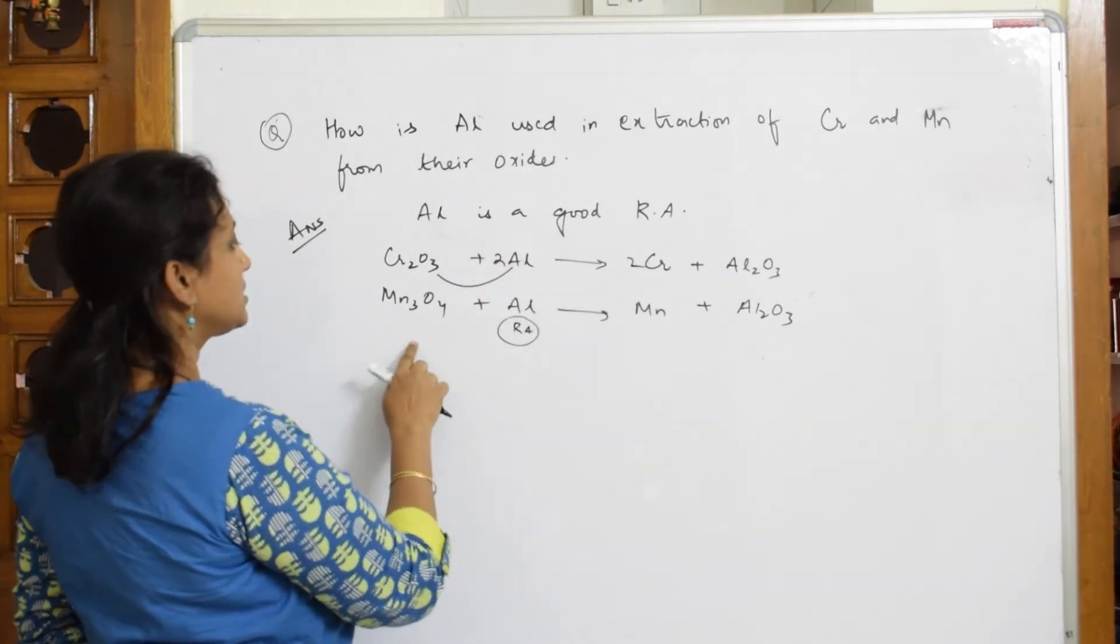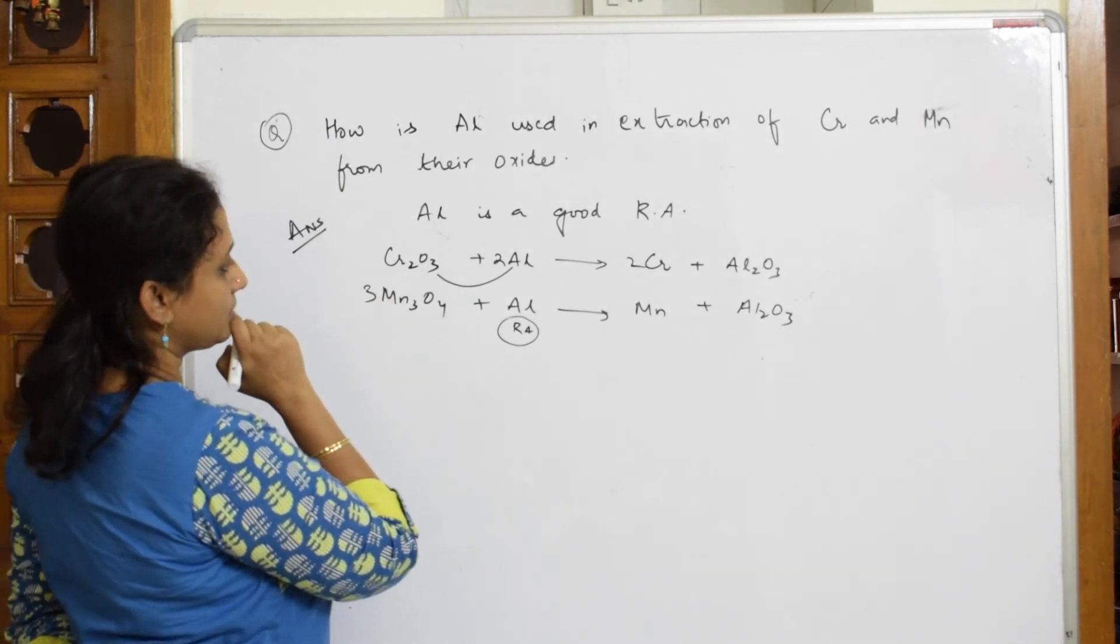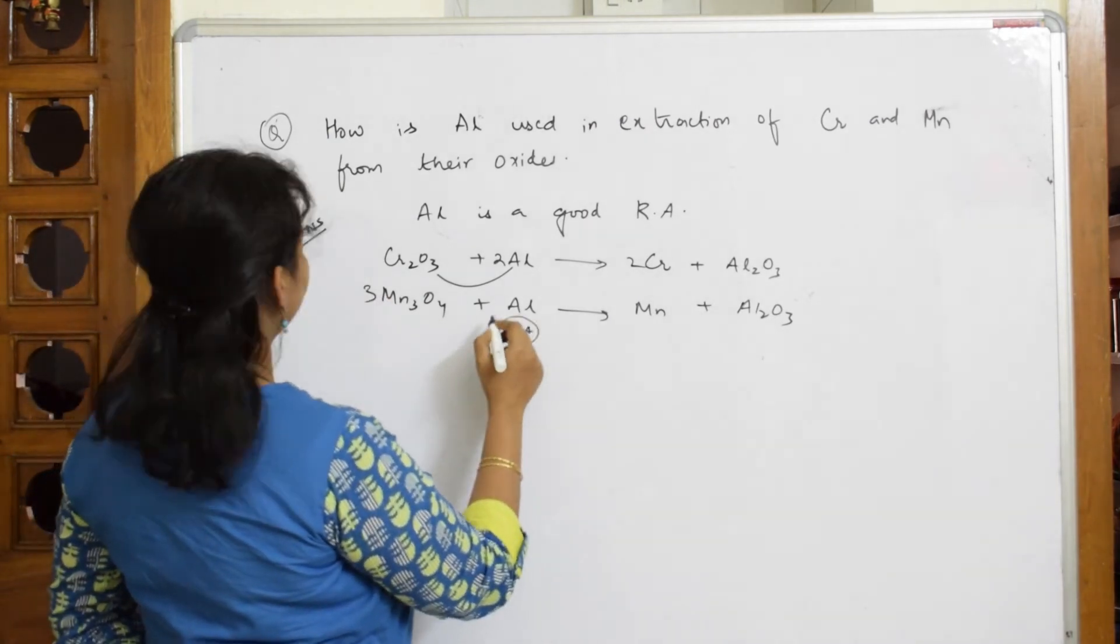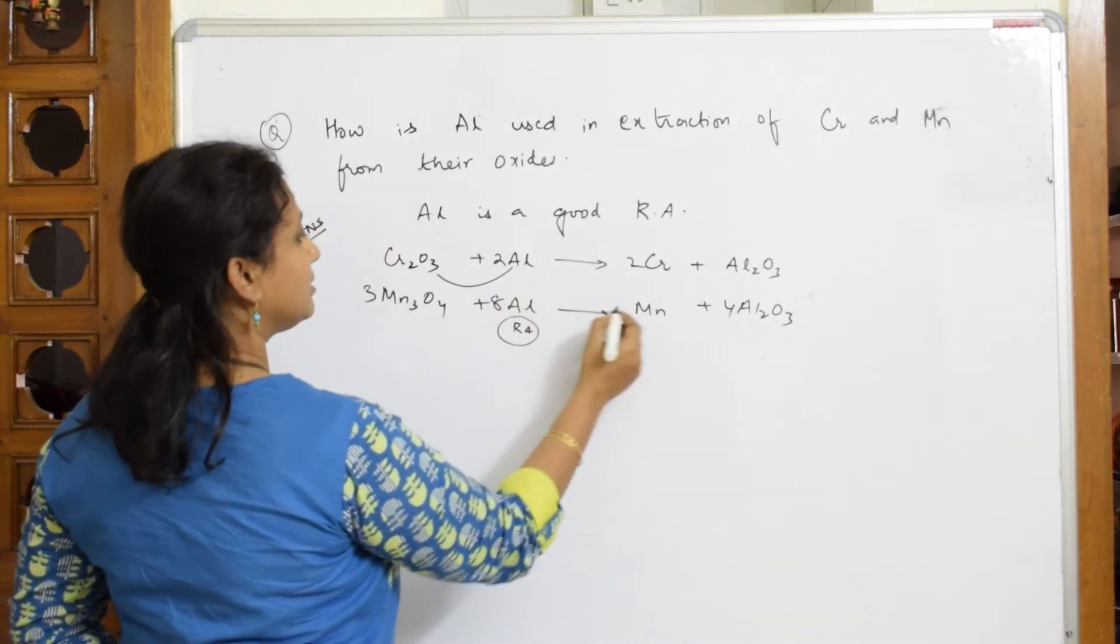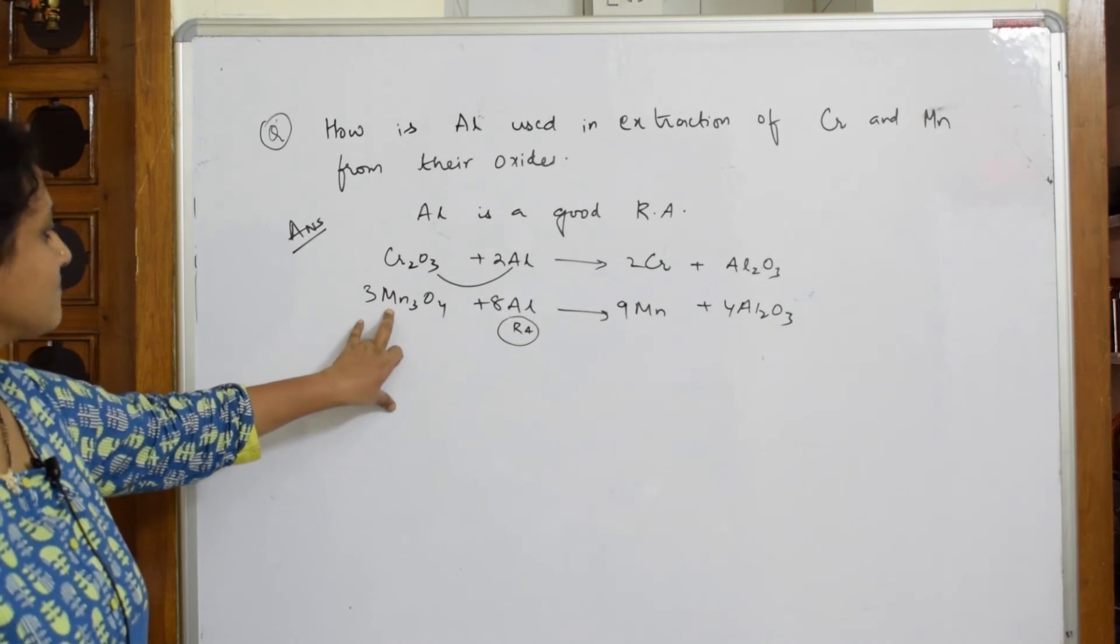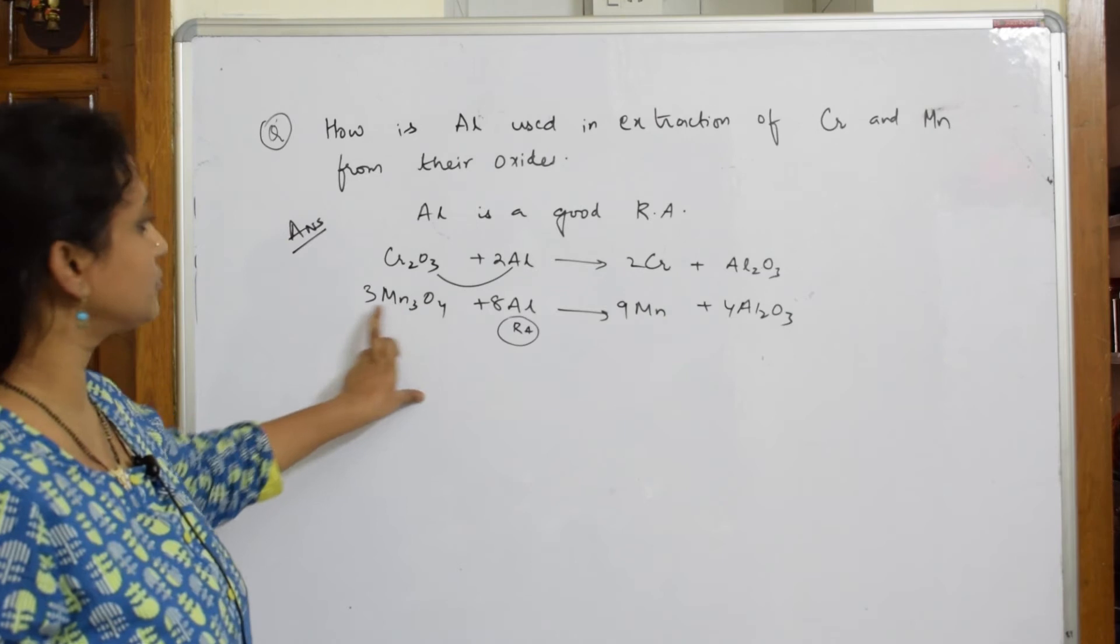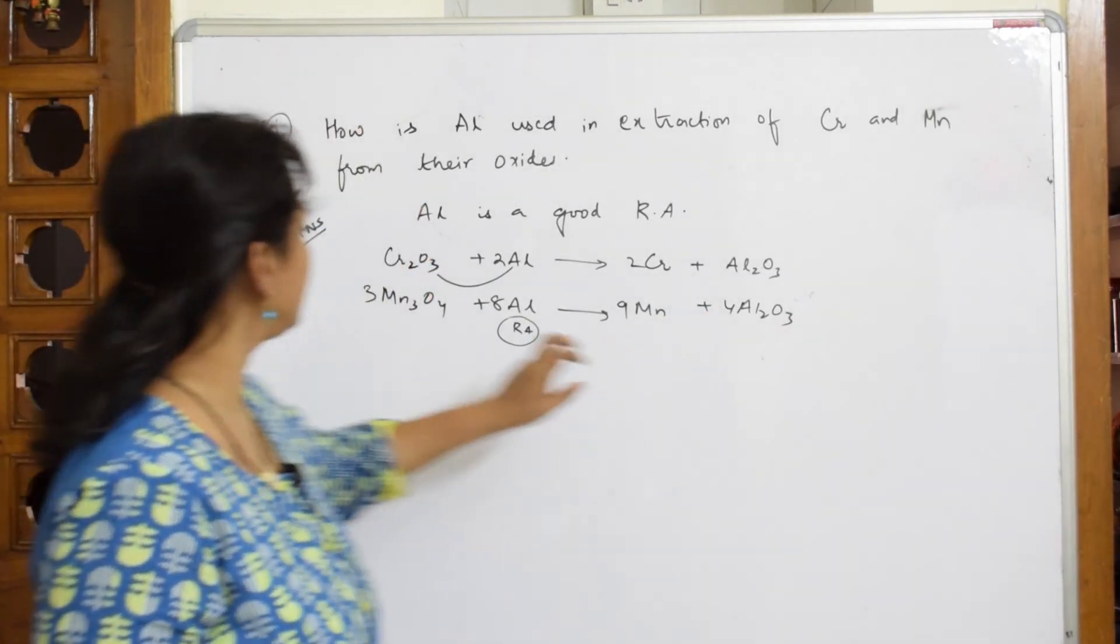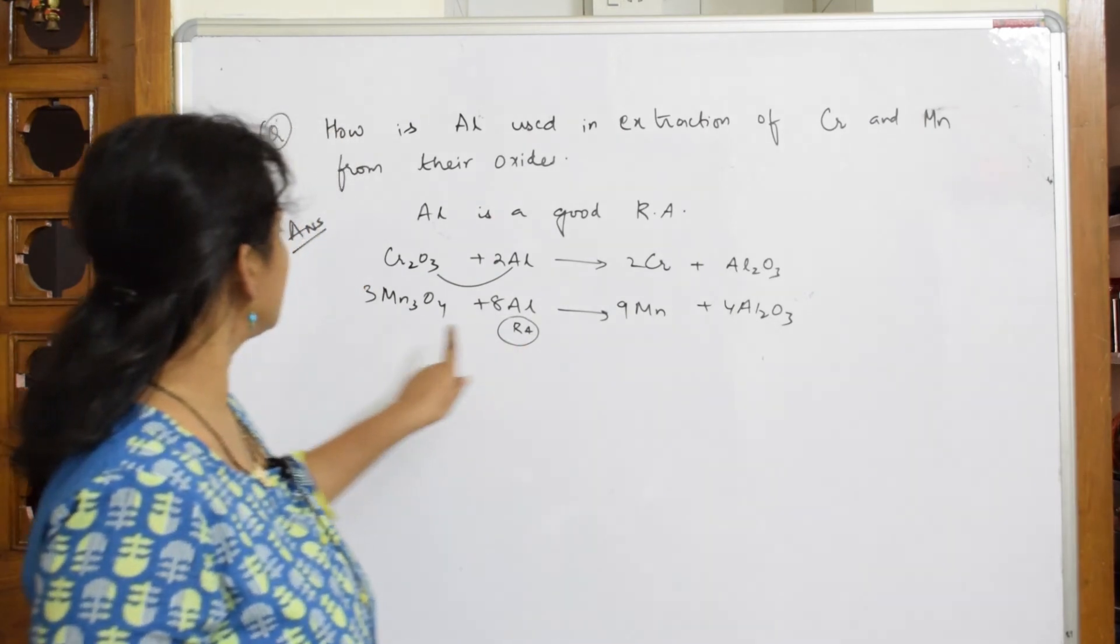Okay, this is balanced. Now this is three. If I take, this is four if I take, yeah this I take n eight and this is nine. Let us see if I have balanced. Manganese is three, threes are nine, then done. Oxygen four threes are twelve done, four threes are twelve. Aluminum is eight here, here eight. Oxygen is four years, yes this is how it's balanced, done.